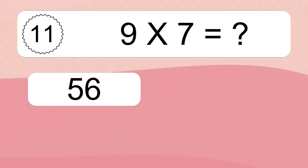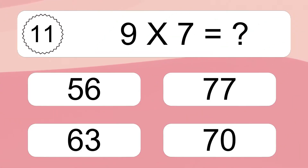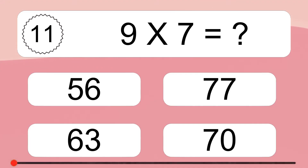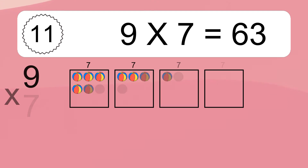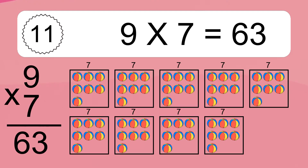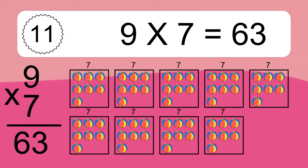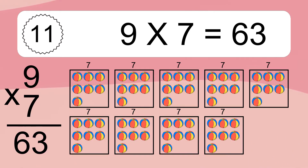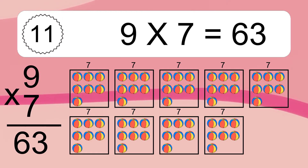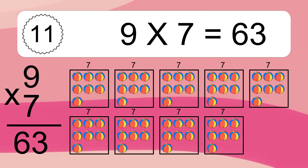9 times 7 equals what? 9 times 7 equals 63. We have 9 boxes, and each box has 7 colorful balls inside. If you count all the balls in all the boxes together, you will have 9 times 7 balls. This equals 63 balls.